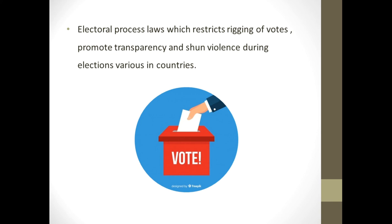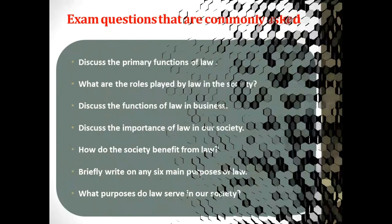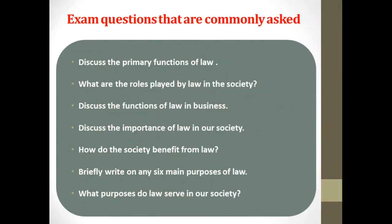Another good example is electoral process laws, which restrict the rigging of votes, promote transparency, and discourage violence during elections in various countries.